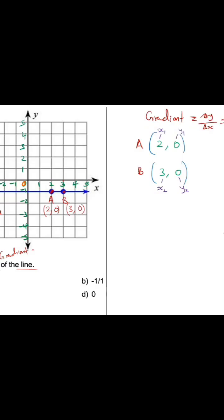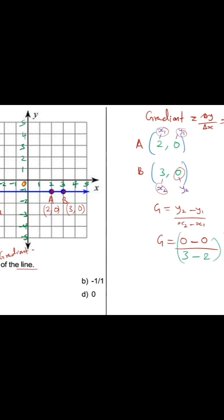For the gradient, that is gradient equals y2 minus y1 over x2 minus x1. In this case, gradient equals y2 which is zero, minus y1 which is also zero, then divide by x2 which is three, minus x1 which is two.